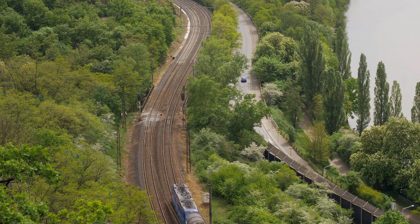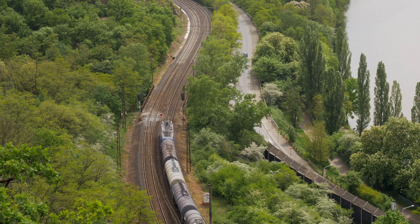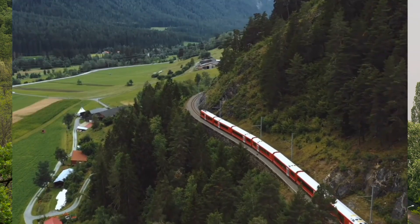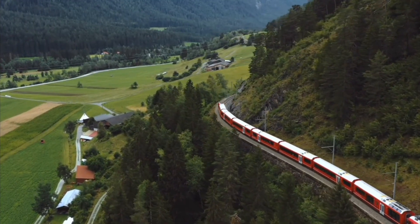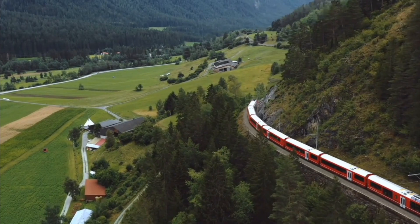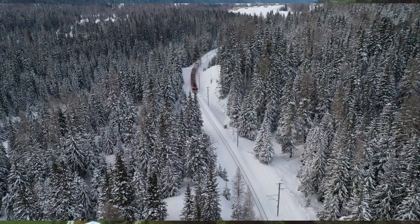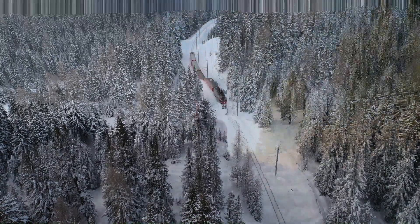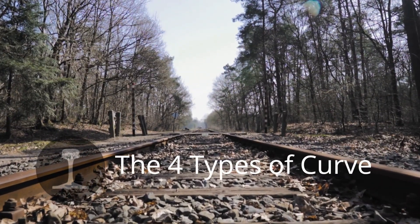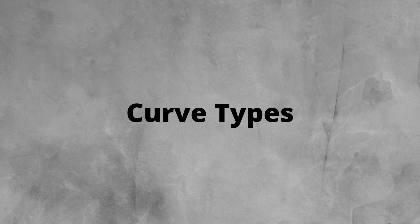Welcome to this video from the P-Way Engineer on the four types of railway curve. Curves are an important element of the horizontal alignment design. They allow the course of the railway line to be altered around natural obstacles and to link destinations together. There are a number of different types of curves, so let's have a look at them.